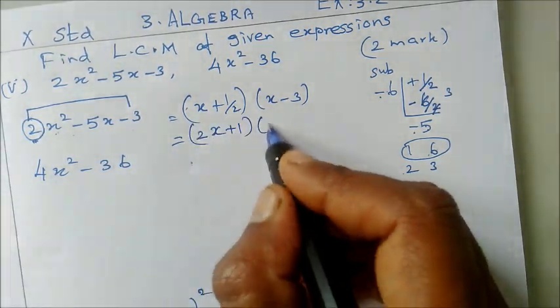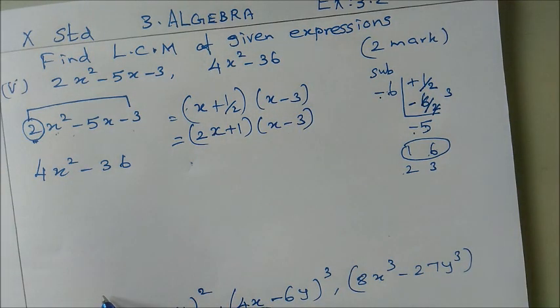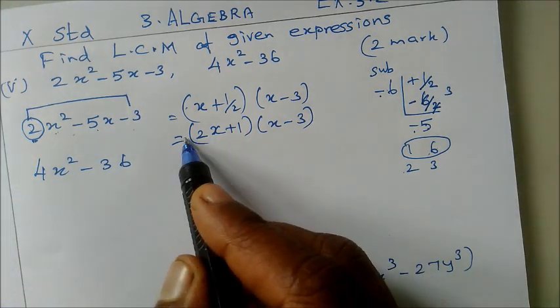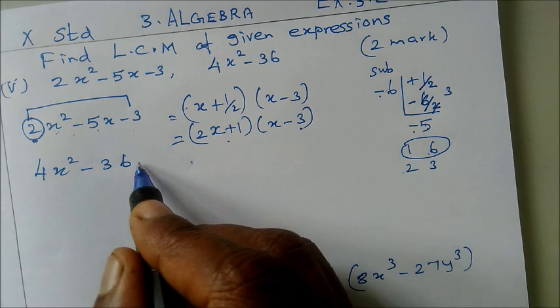Multiply by 2 to eliminate fractions: 2x plus 1 into x minus 3. So 2 factors changed. The given quadratic expression becomes the product of 2 factors.